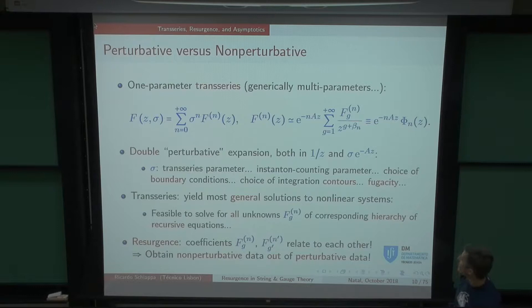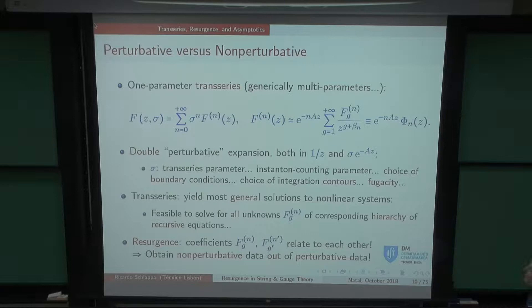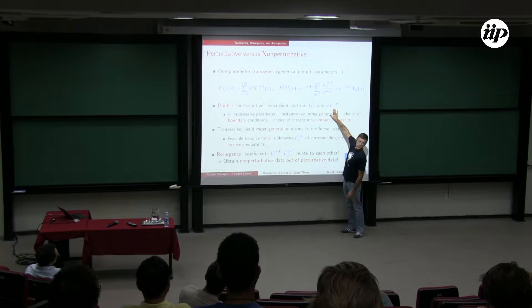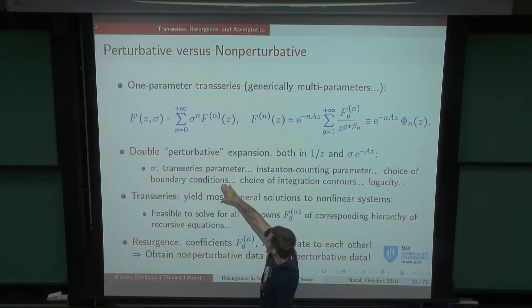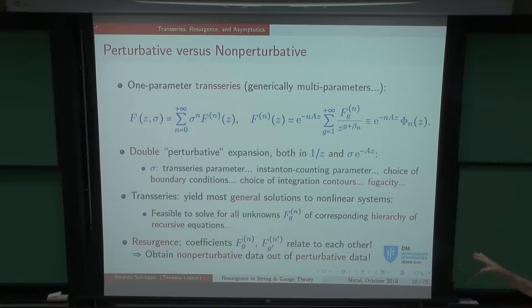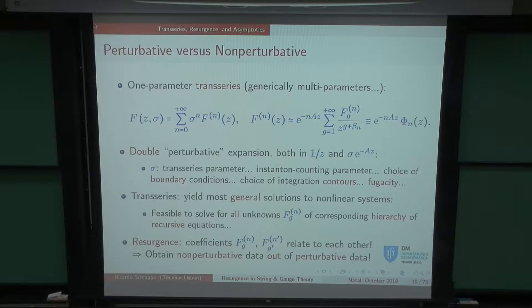Next to the N-instanton sector I can still do a loop expansion — those are the G's, giving back powers of the monomial in 1/Z. Beta is a characteristic exponent that may matter later in the matrix model. There's a sigma — the trans-series parameter — which at the formal level is an instanton counting parameter, but you can think of it as a choice of boundary conditions. The trans-series is like a family of solutions to a differential equation; sigma parametrizes that family.